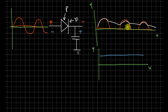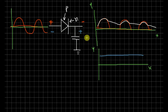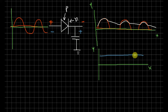By adding the capacitor, the capacitor stores and supplies power during the gaps, and we get an output that is close to steady DC.